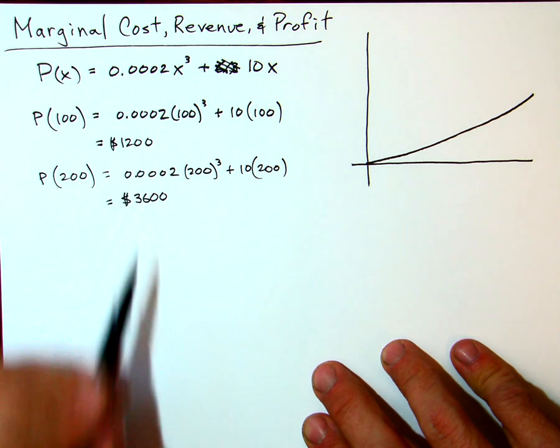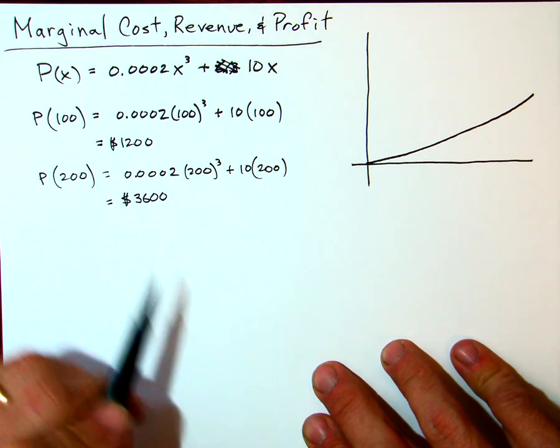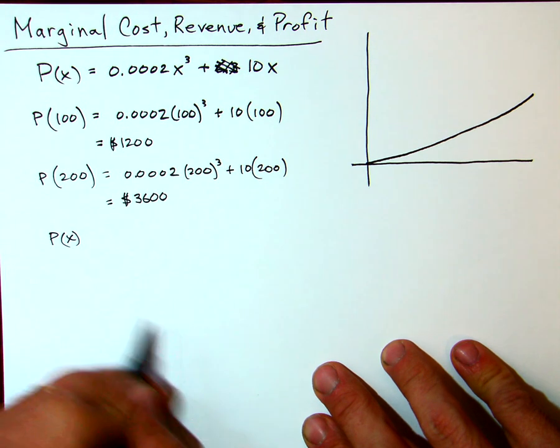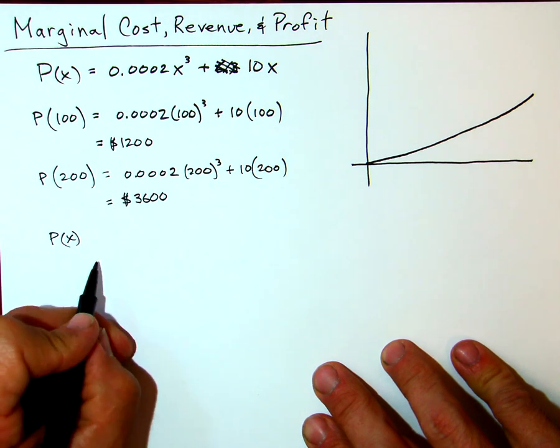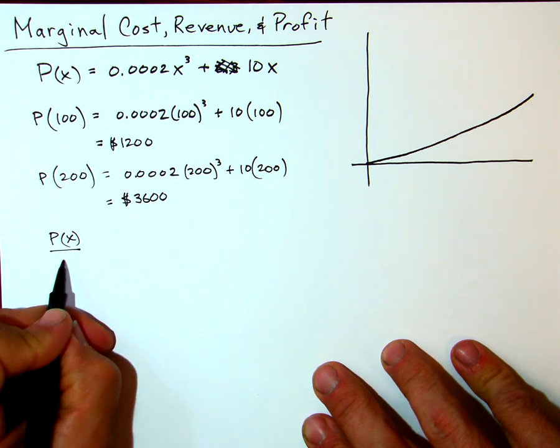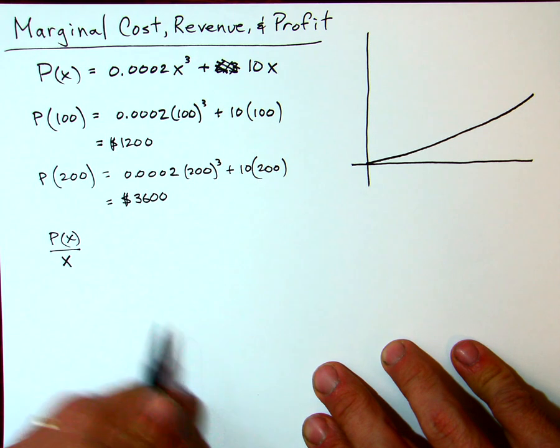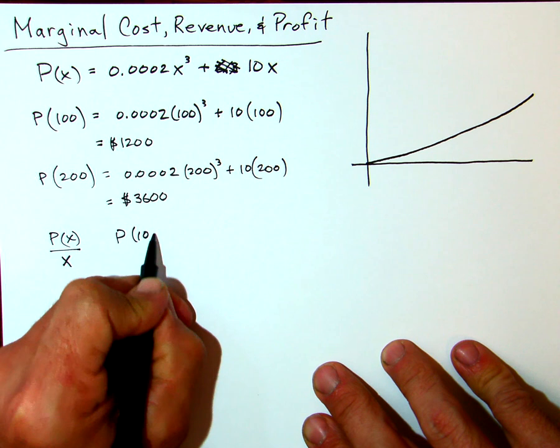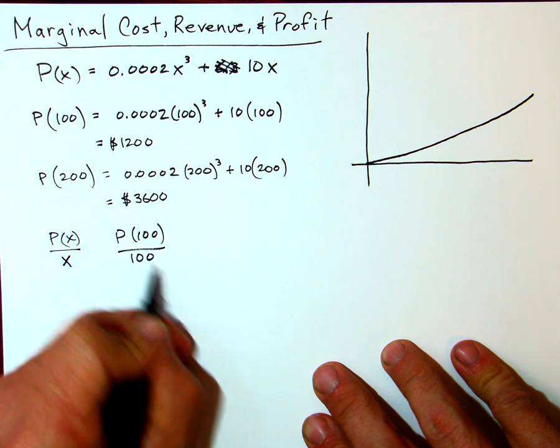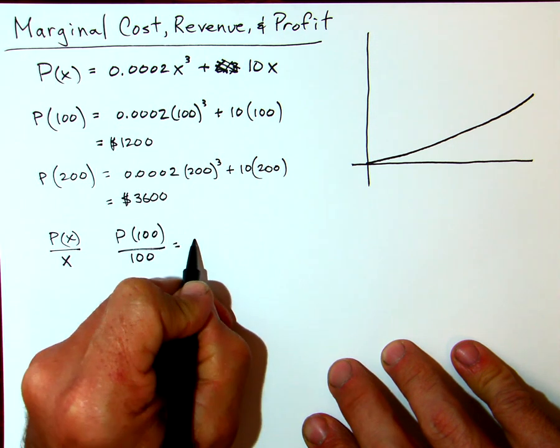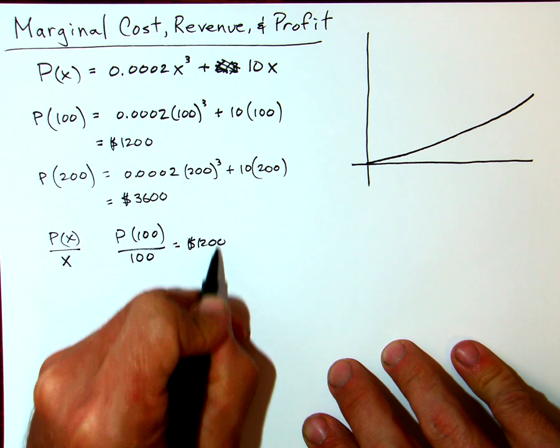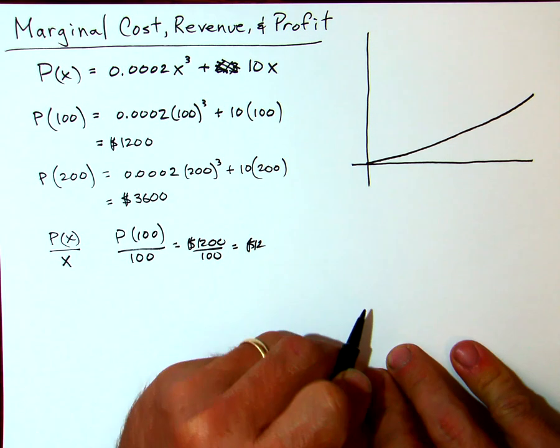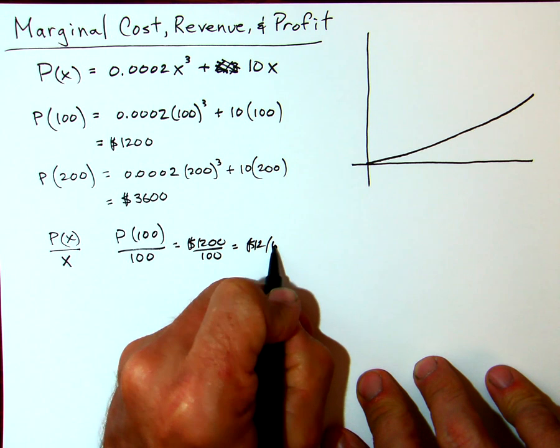If we look at our average profit, the average profit per bicycle for the first 100—this is average profit, the profit for x number of bicycles over the number of bicycles that we've sold. That gives us the average profit per bicycle. For P, the profit, the average profit for the first 100 bicycles is 1200 over 100, or $12 per bicycle.